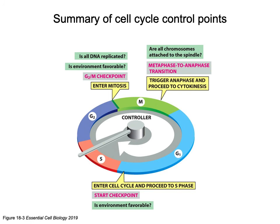The next checkpoint is the G2/M checkpoint. Is all the DNA replicated? Is the environment favorable? There's no point in rearranging microtubules and pulling chromosomes apart if cell division isn't necessary or if DNA replication wasn't done correctly. If that checkpoint is met, you enter mitosis. We must also make sure all chromosomes are attached to spindles — that's why in metaphase the chromosomes line up, attached to microtubules, so they can be pulled apart in anaphase. That checkpoint triggers anaphase and then cytokinesis.